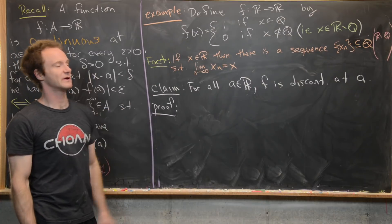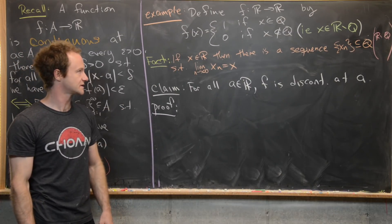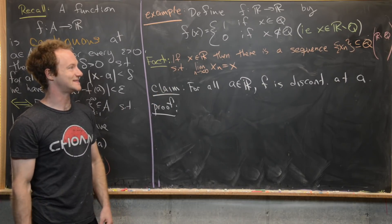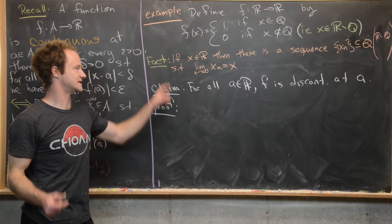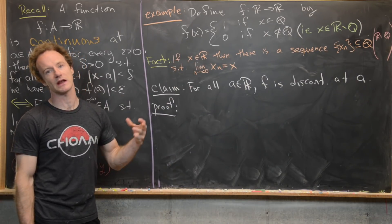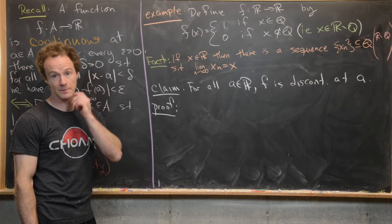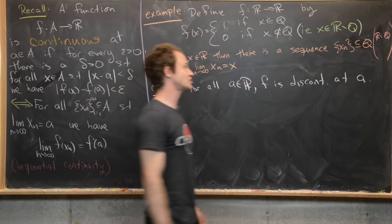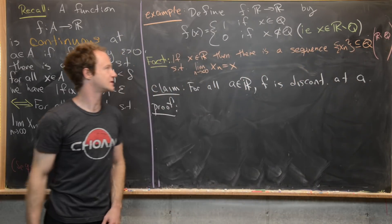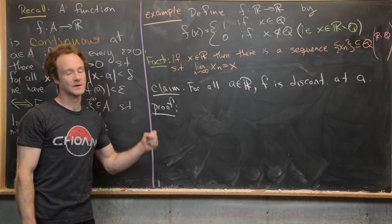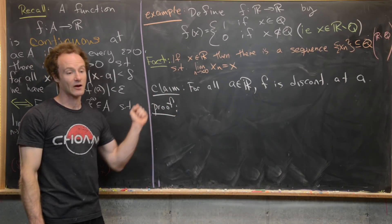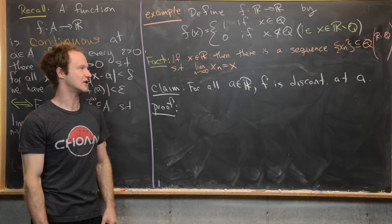We'll use the following previously proven fact: if x is any real number, there is a sequence of rational numbers converging to x — and this holds even when x is irrational. Likewise, every real number is also the limit of a sequence of irrational numbers. So all real numbers are limits of sequences of rationals and also limits of sequences of irrationals.